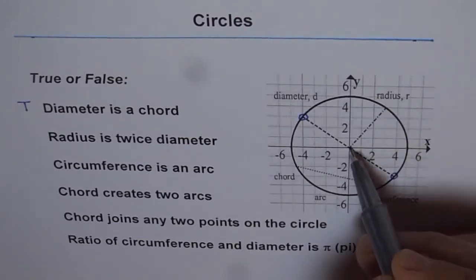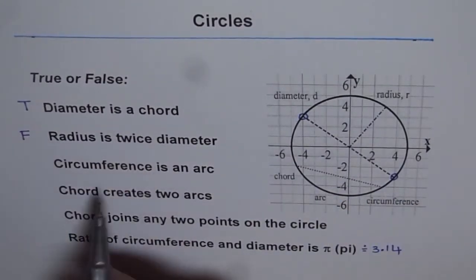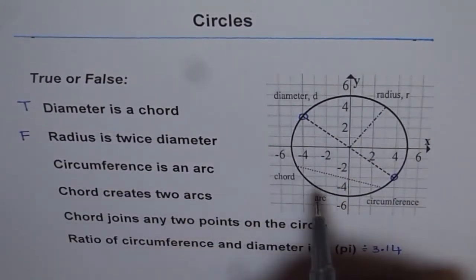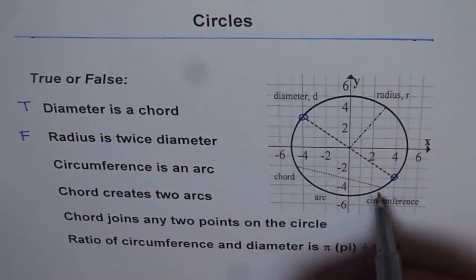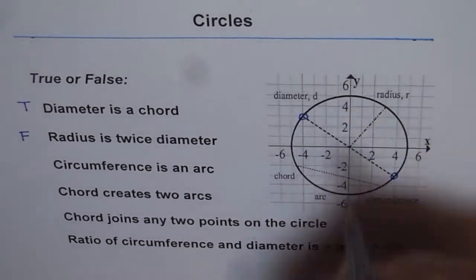Circumference is an arc. So circumference is an arc, yes it is. You can think about a chord very small, just touching these two points. So circumference is one whole arc. That is correct.